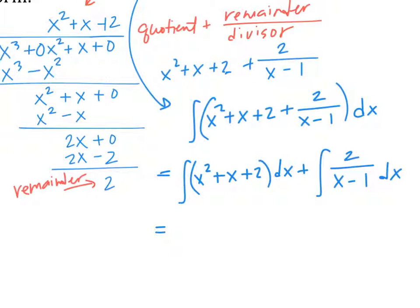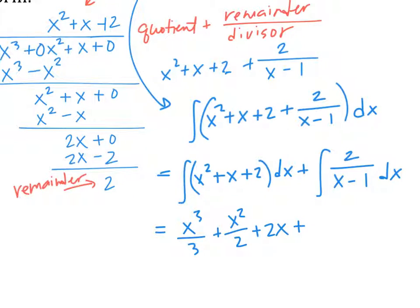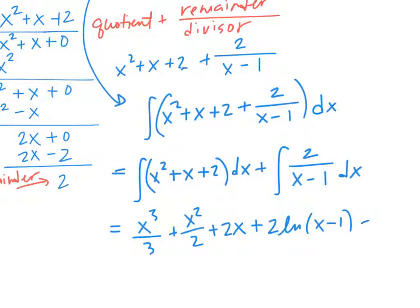Easy stuff: X cubed over 3 plus X squared over 2 plus 2X. And then what is the integral of 2 over X minus 1? Natural log. So that's the only way to get that X minus 1 in the denominator — natural log. So 2 natural log of X minus 1. And don't forget your plus C.